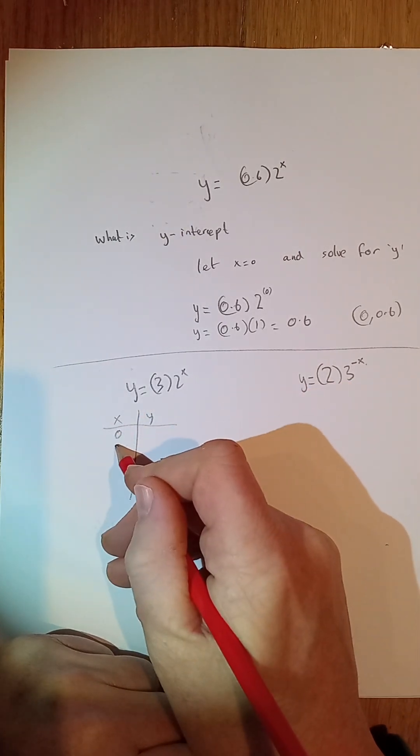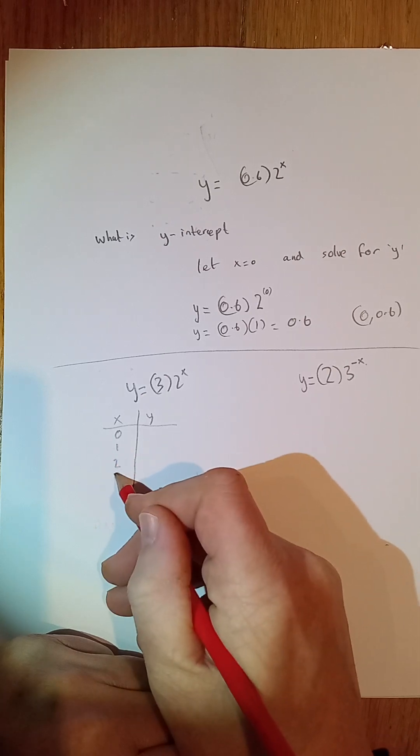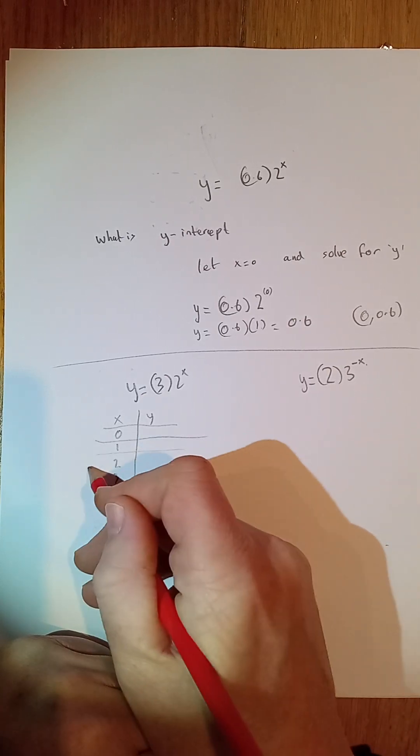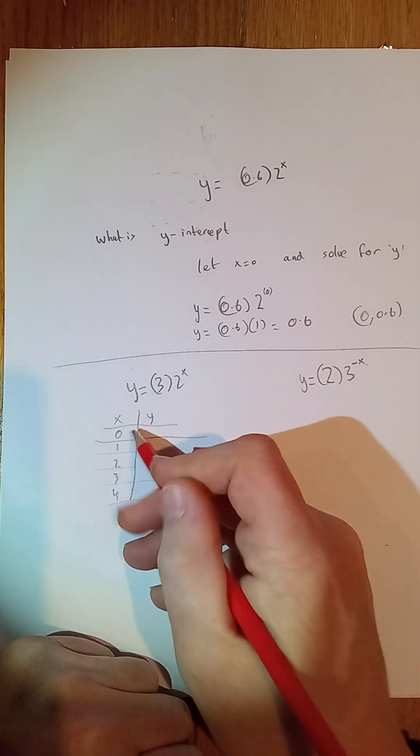Let's say you have y equal 3 times 2 to the x, and we have another function, y equal to 2 times 3 to the minus x, and I want to graph both these functions. Well, you can use your calculator, but I'll do a very simple one. So we'll do two columns, x and y.